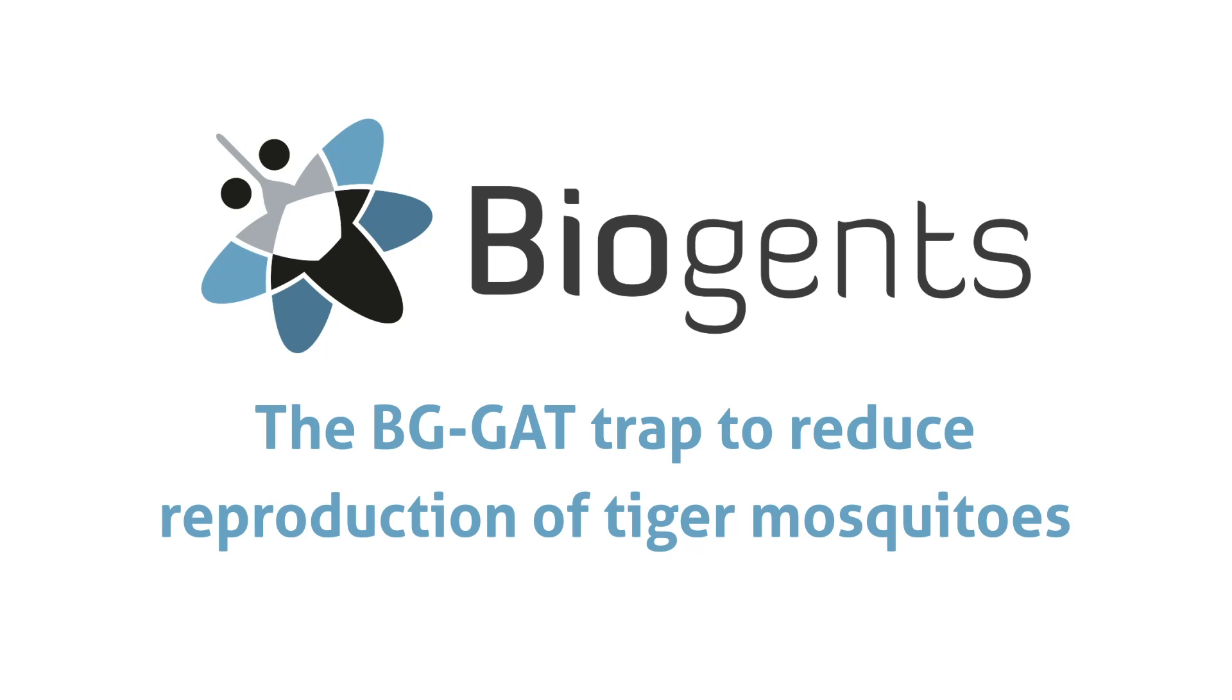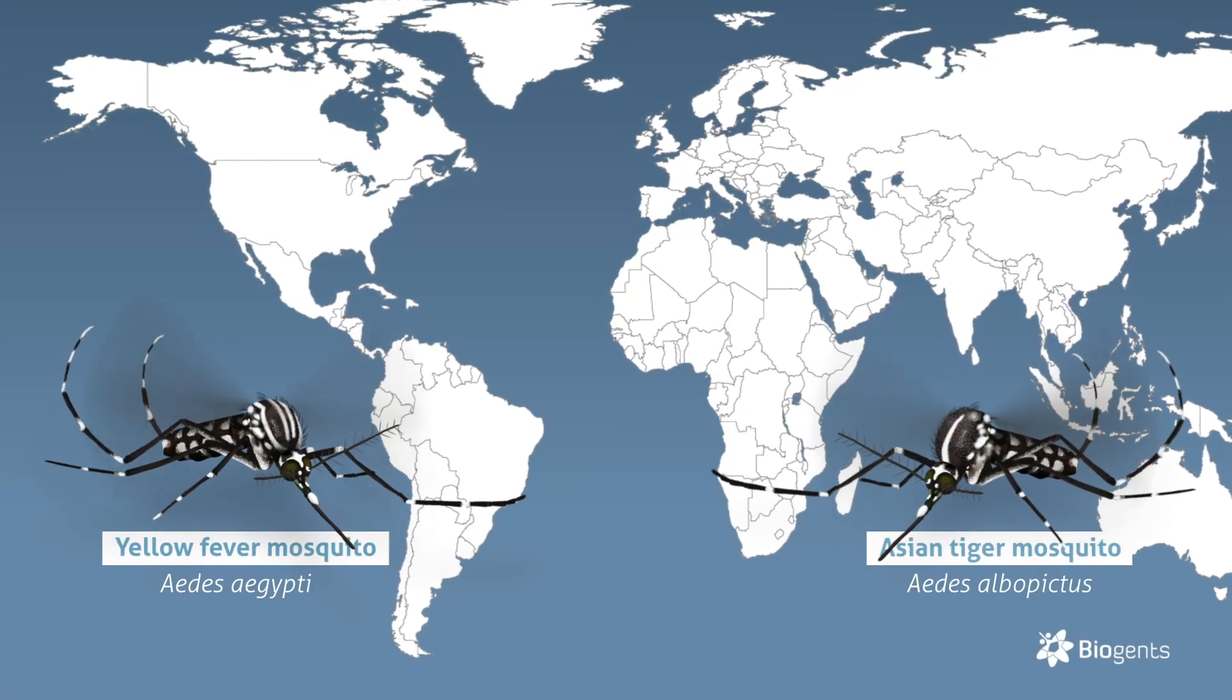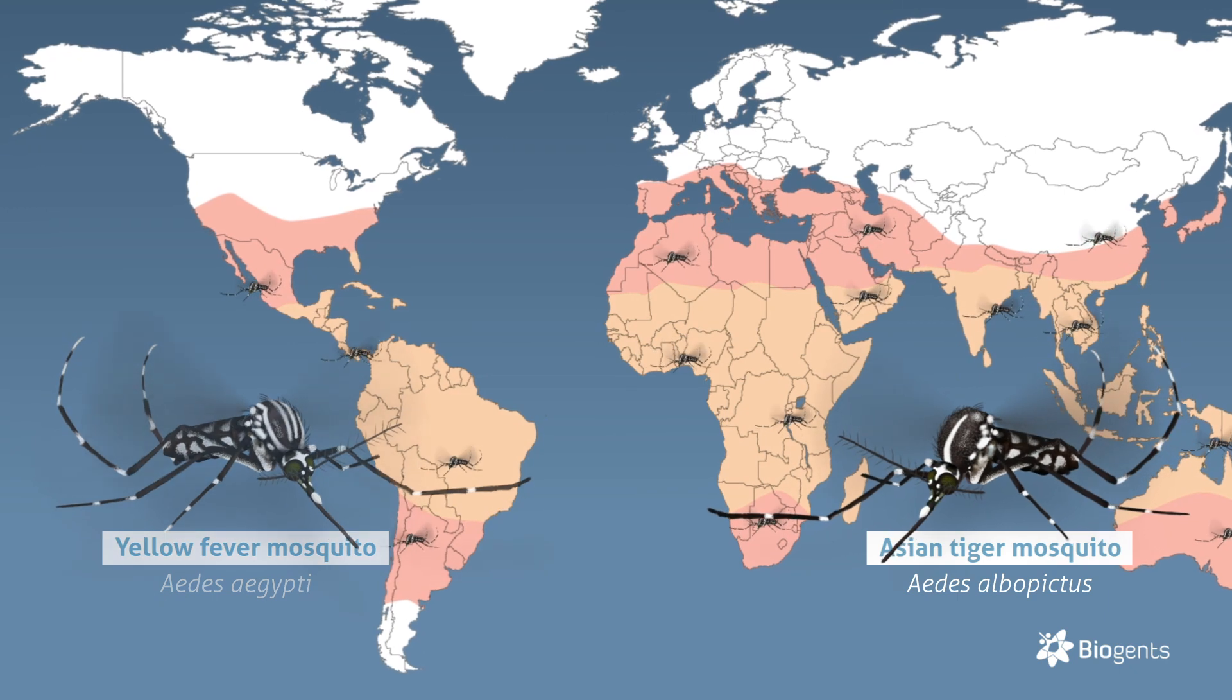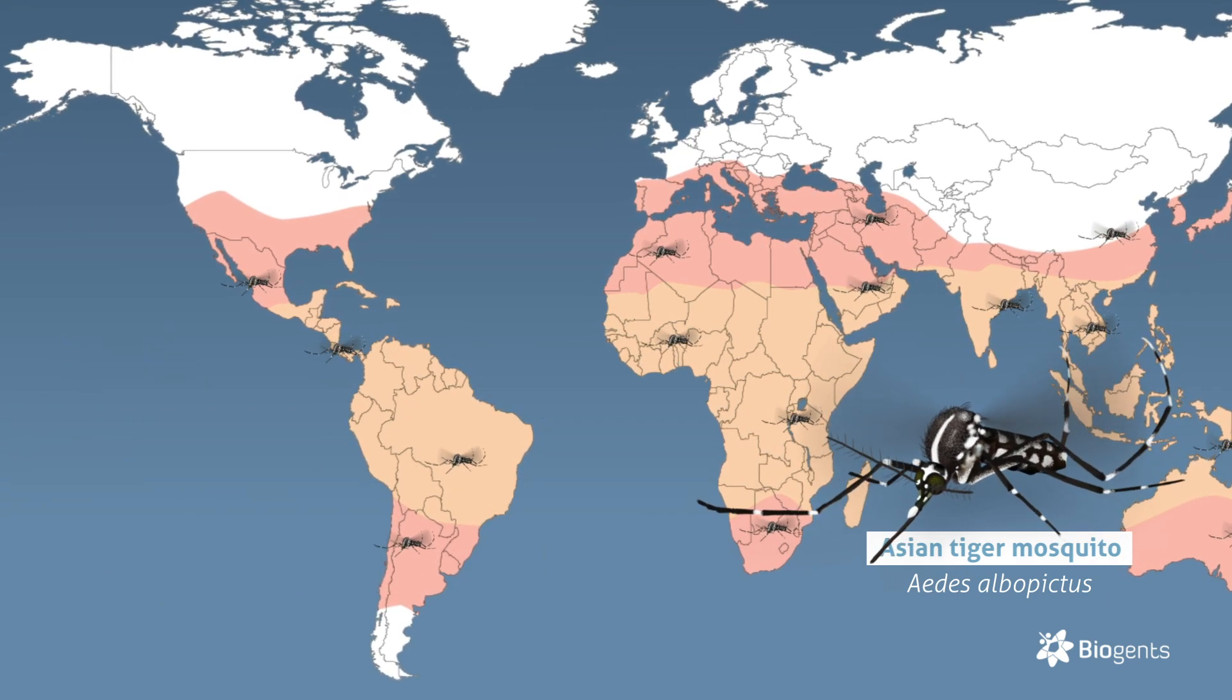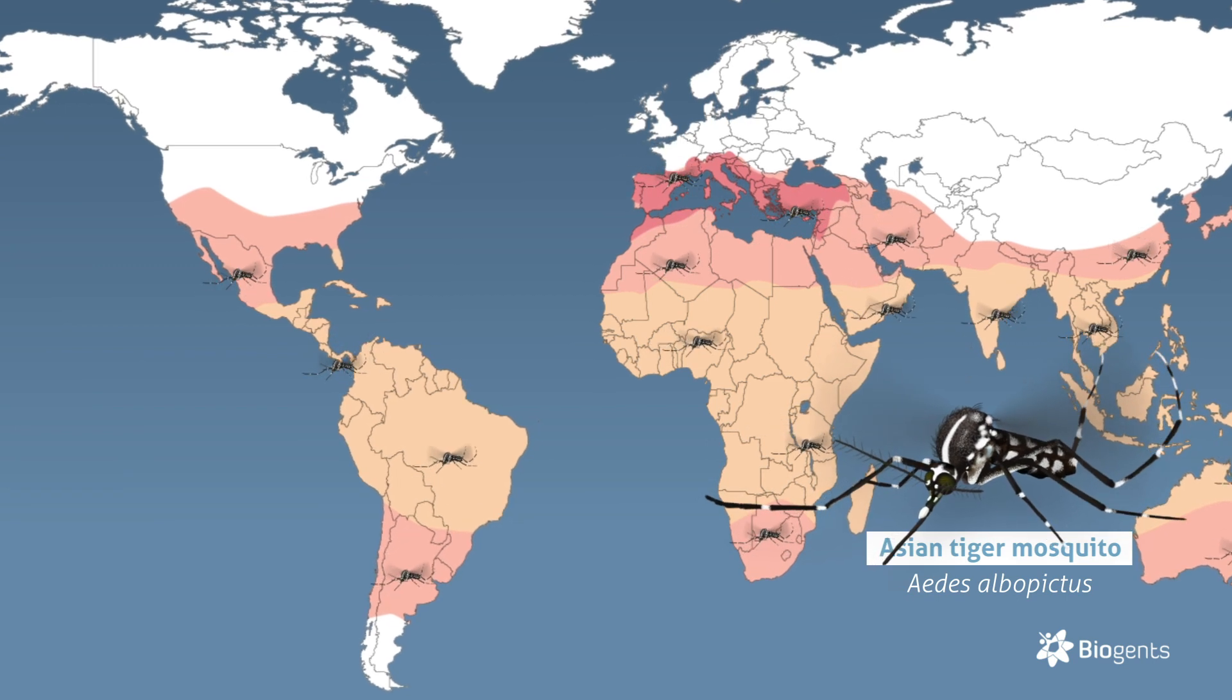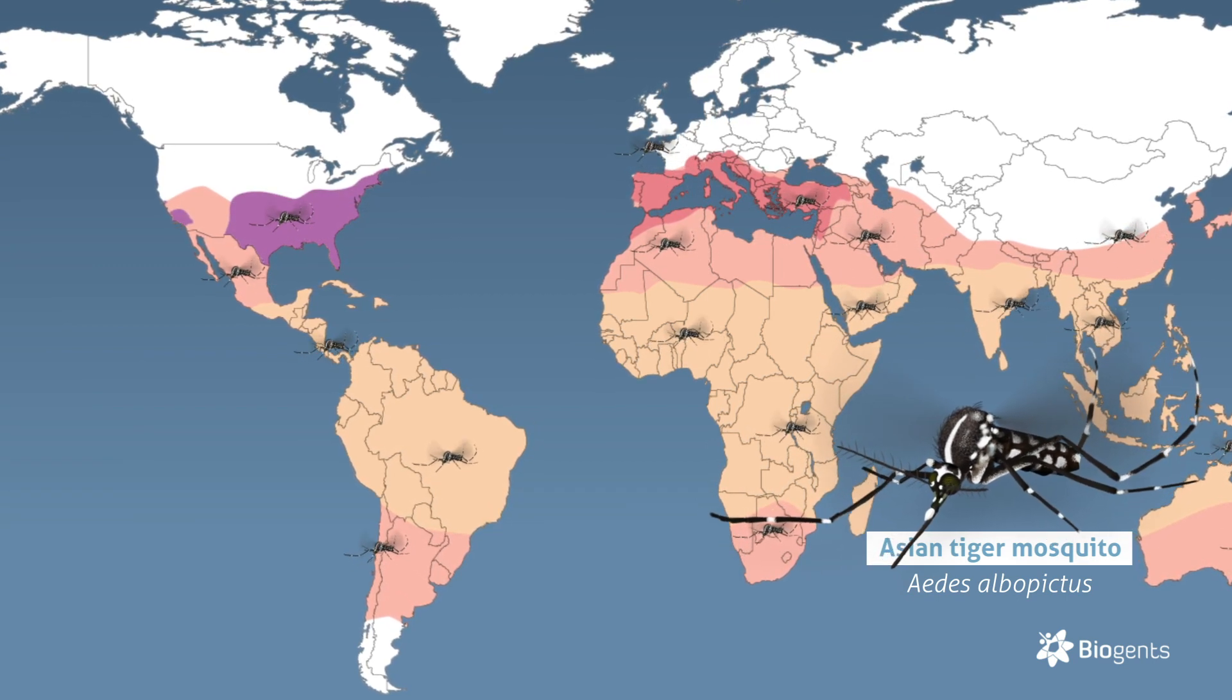The BG Gat Trap to reduce the reproduction of tiger mosquitoes. Tiger mosquitoes are a major pest throughout the subtropical and tropical regions. The Asian tiger mosquito is also widespread in the Mediterranean regions of southern Europe and the south-central and eastern United States.